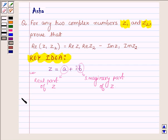Let us now begin with the solution. Let Z1 equal A plus i times B, and Z2 equal C plus i times D.